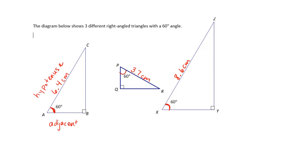These sides are all adjacent to the 60-degree angle — they all touch it. This one is 3.2 centimeters, this one is 1.9 centimeters. The side attached to the 60-degree angle — see how it's touching it — is adjacent. In the largest triangle it's side XY, and I got 4.3 centimeters.